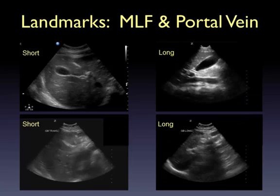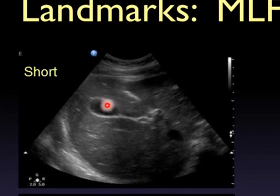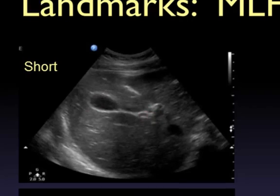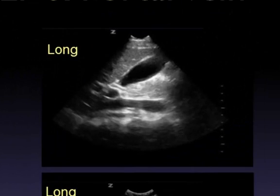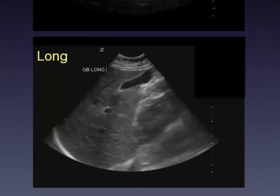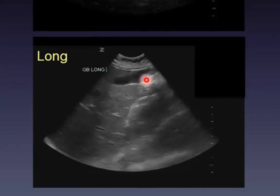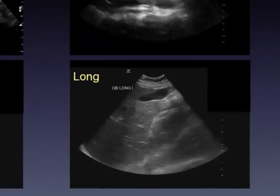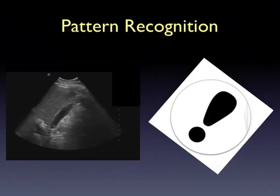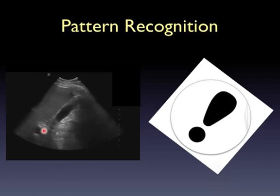Here are a few more landmark images. In a transverse or short axis view, we see the gallbladder, main lobar fissure, and the portal vein. In long axis views we see the gallbladder with the portal vein right next to the liver. Pattern recognition is important — the gallbladder has been compared to an exclamation point, with the gallbladder being the long portion and the portal vein being the point. If you can find the portal vein, you'll be able to find the common bile duct.